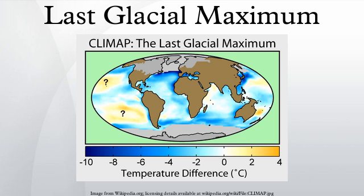Only in Central America and the Chocó region of Colombia did tropical rainforests remain substantially intact, probably due to the extraordinarily heavy rainfall of these regions. Most of the world's deserts expanded. Exceptions were in what is now the western United States, where changes in the jet stream brought heavy rain to areas that are now desert and large pluvial lakes formed, the best known being Lake Bonneville in Utah. This also occurred in Afghanistan and Iran, where a major lake formed in the Dasht-e Kavir.